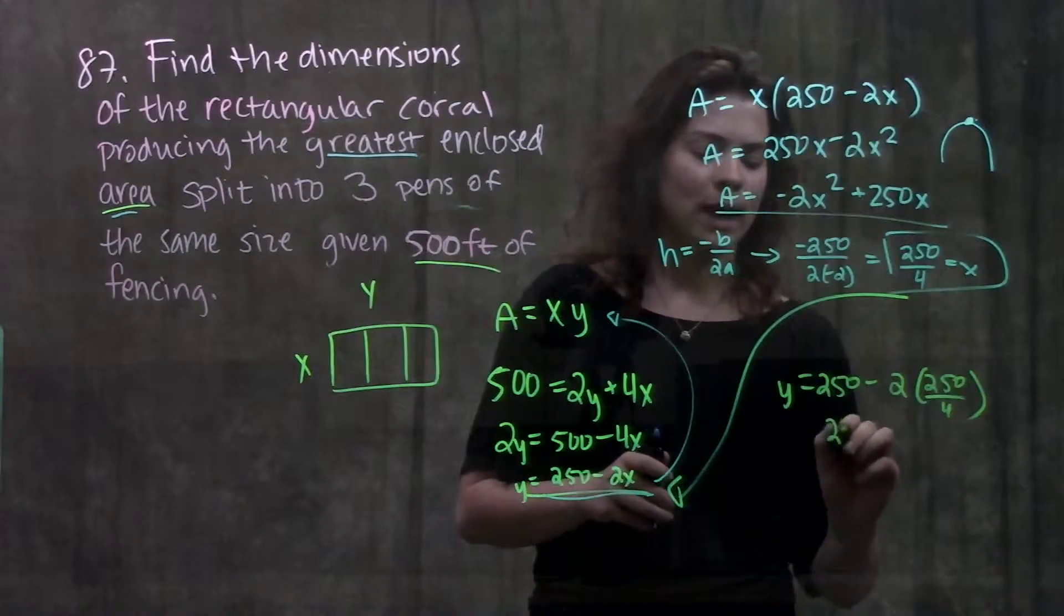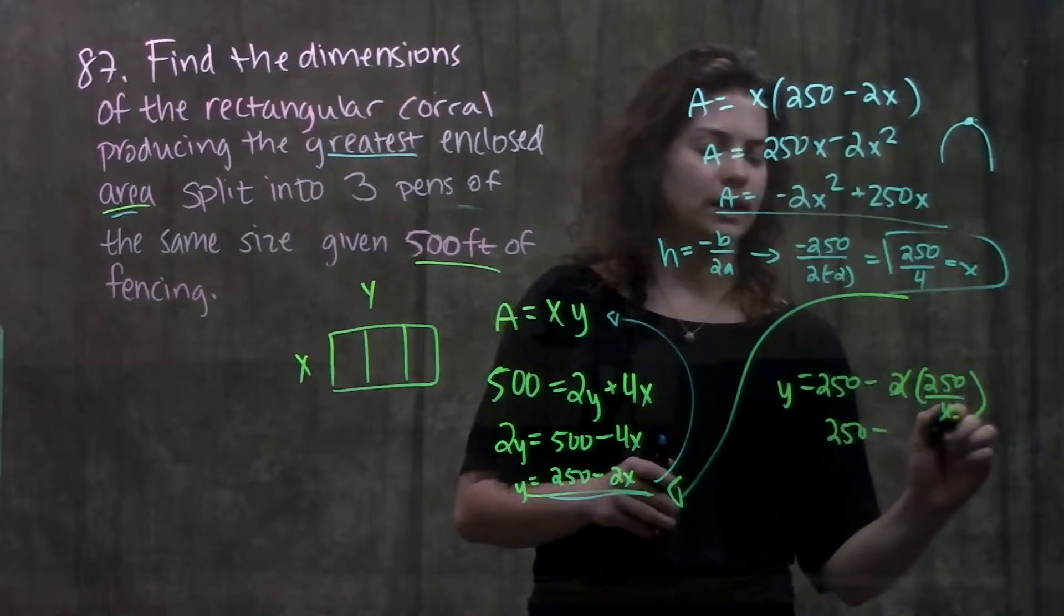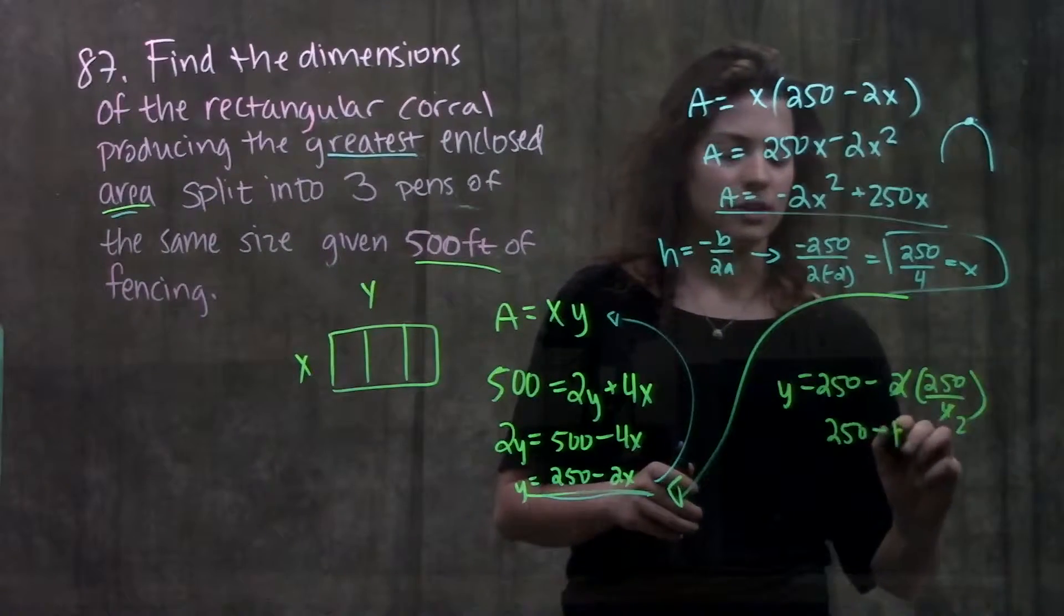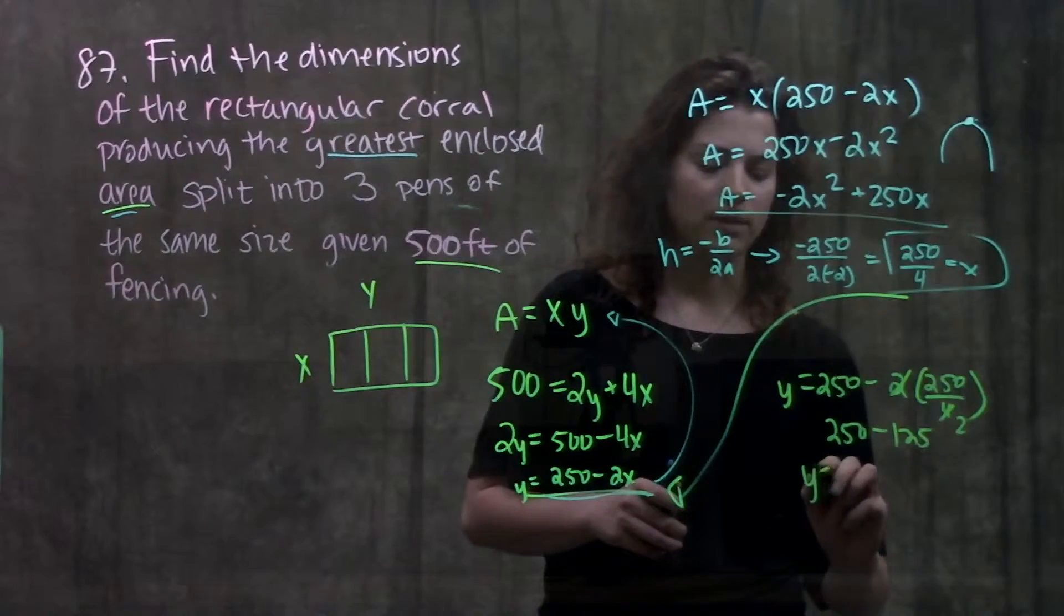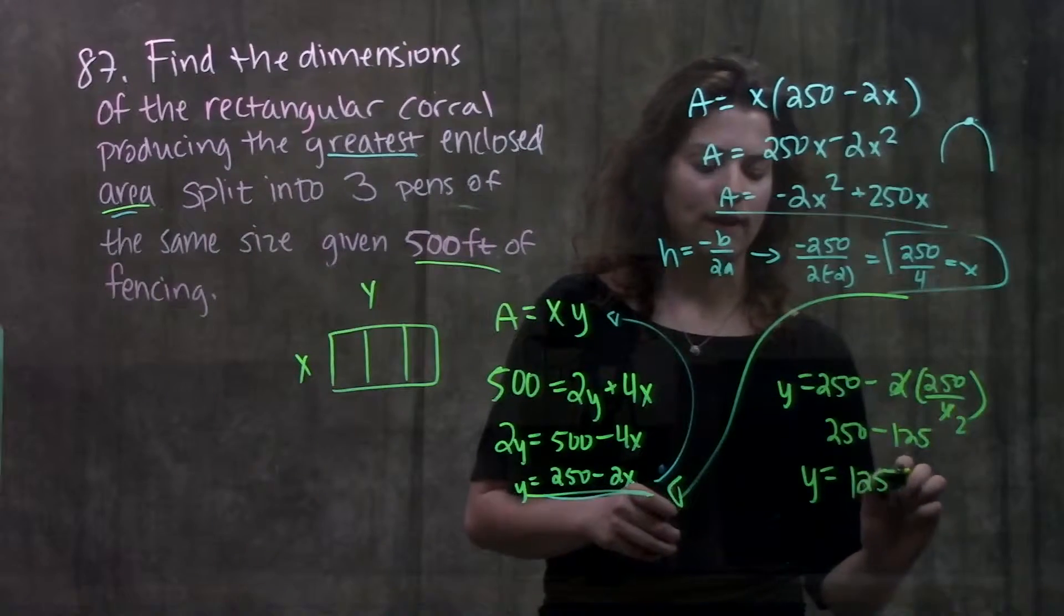Solving this out we have 250 minus, 2's can cancel, I'm going to 250 over 2 which is just 125. That gives me a y value of 125 feet.